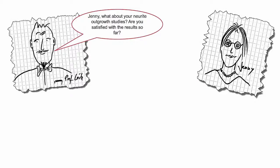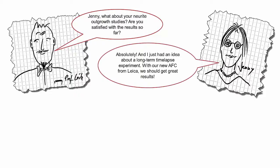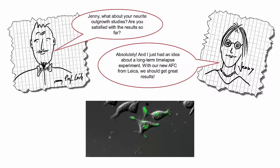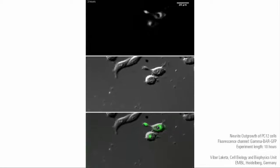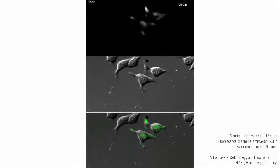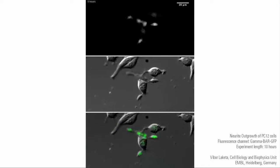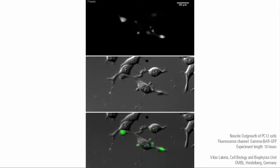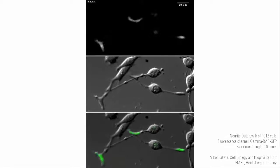Hey Jenny, what about your neurite outgrowth studies? Are you satisfied with the results so far? Absolutely. And I just had an idea about a long-term time-lapse experiment. With our new AFC from Leica, we should get great results. Thanks to adaptive focus control, long-term experiments like this 10-hour movie showing neural outgrowth of PC-12 cells can be imaged without losing focus due to environmental changes.